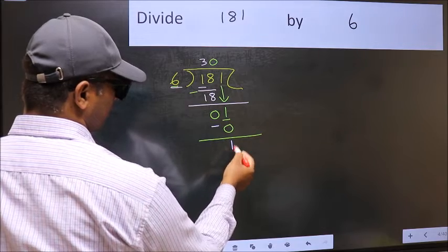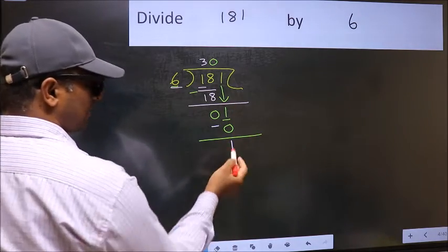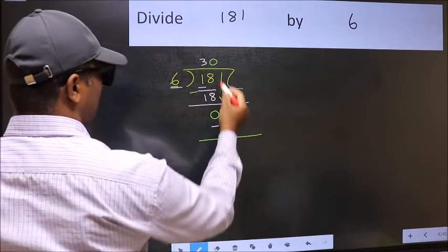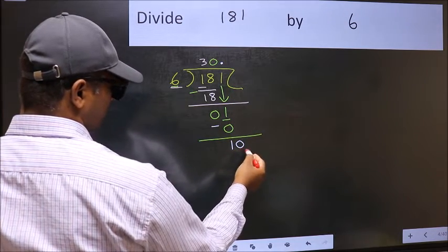Over here, we did not bring any number down. And 1 is smaller than 6. So now you can put dot and take 0. So 10.